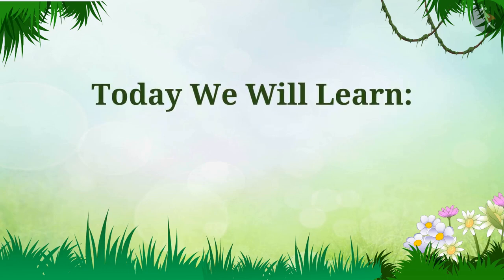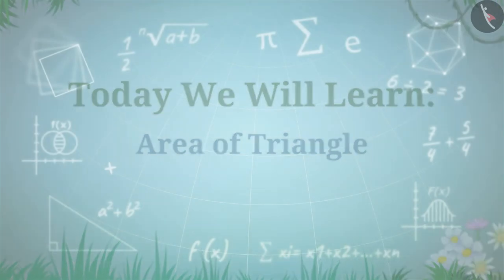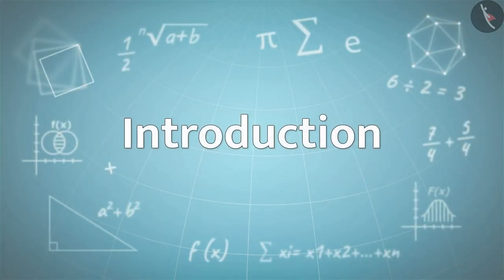Today we will learn about the area of triangle. A polygon made up of three sides is called a triangle.